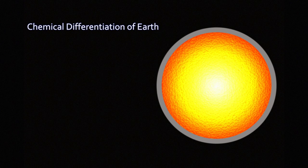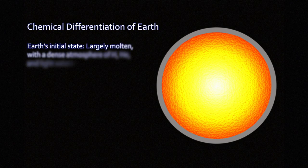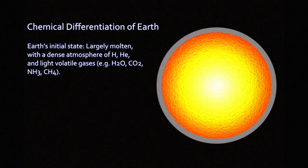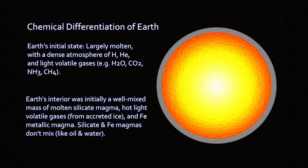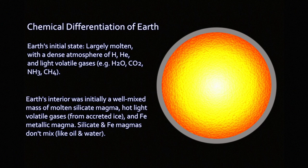So the Earth, left alone, begins to chemically differentiate. It would have already begun doing so, and then the Theia impact would have reset that. But every large object that's a terrestrial rocky object in our solar system probably went through something very similar to this.